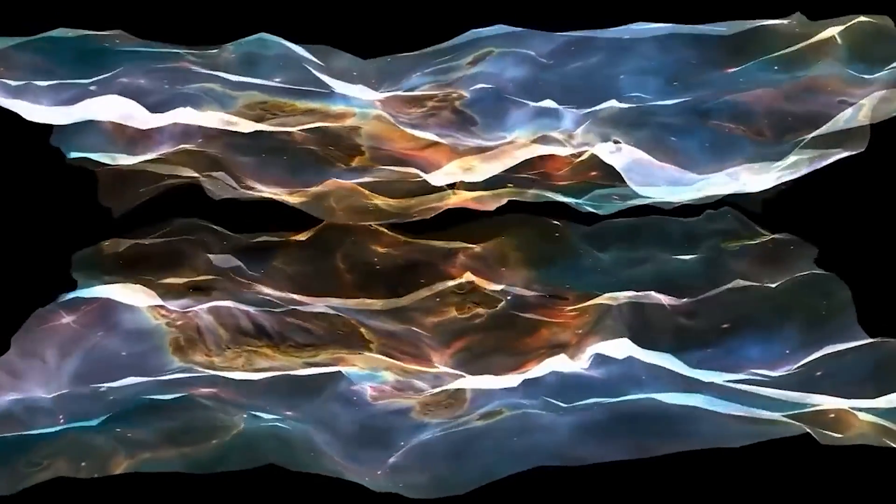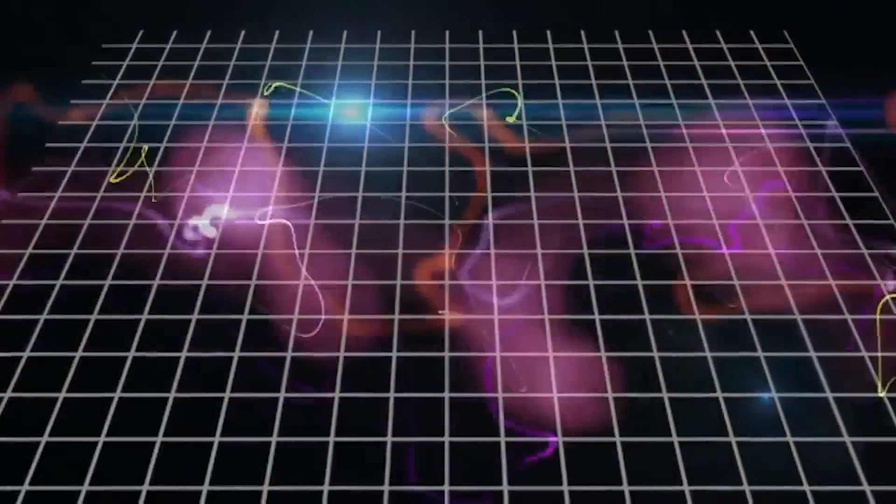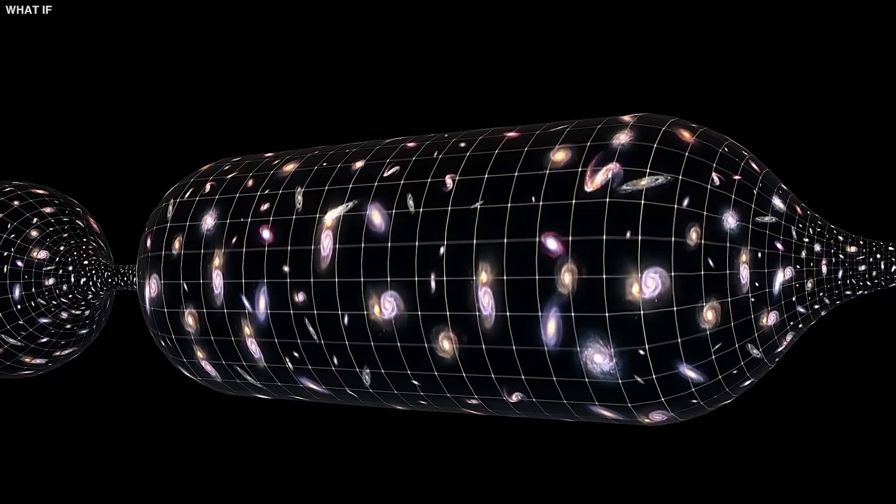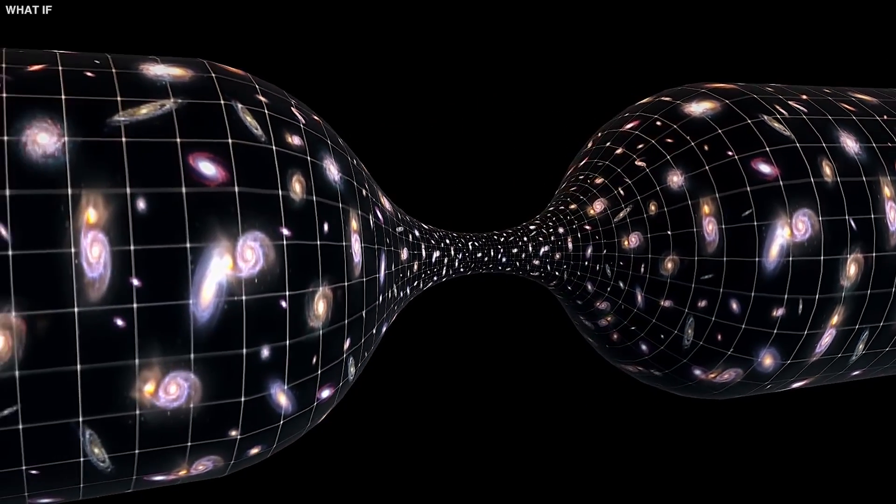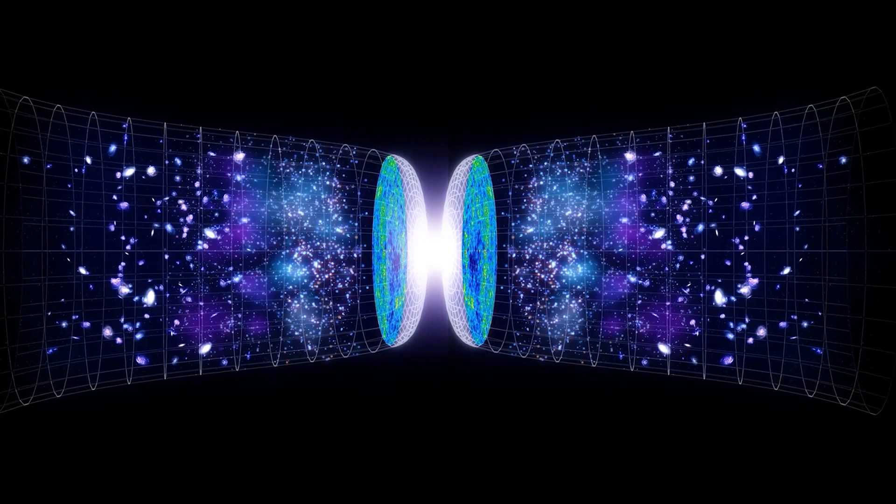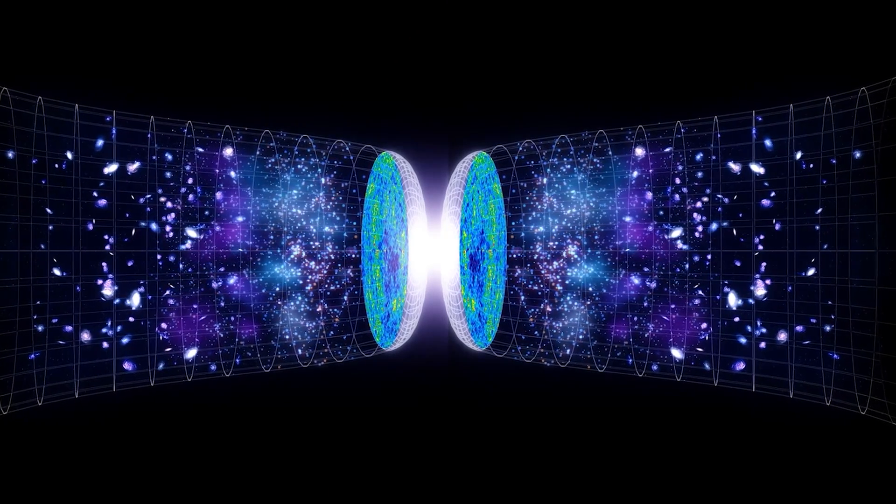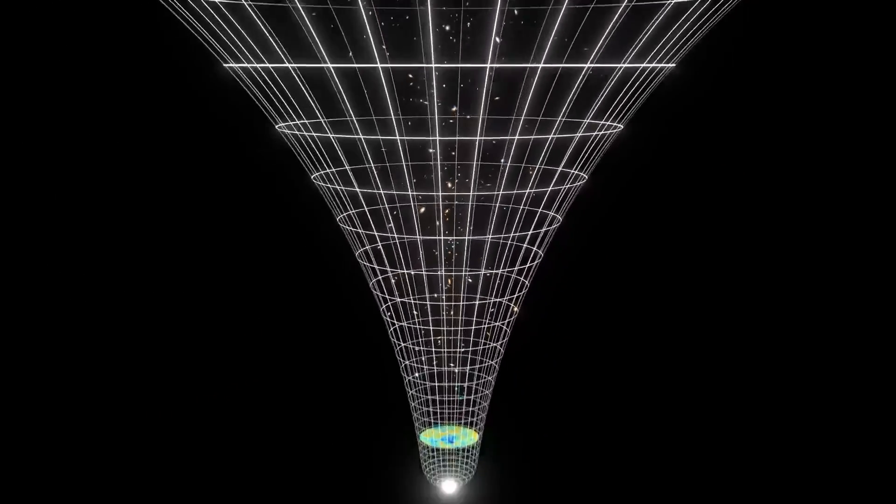Extending the ekpyrotic concept has led to a theory, again motivated by string theory, called cyclic cosmology. While the idea of a repeating universe has been contemplated for thousands of years, string theory provides it with a solid mathematical foundation. The cyclic universe operates as one would imagine, oscillating between Big Bangs and Big Crunches in an endless cycle, extending infinitely into the past and future.